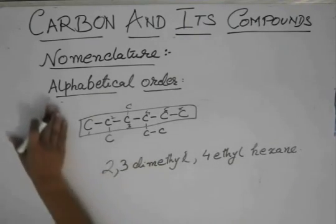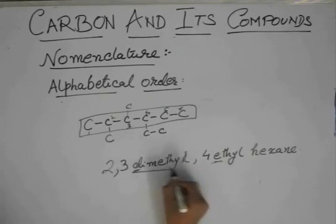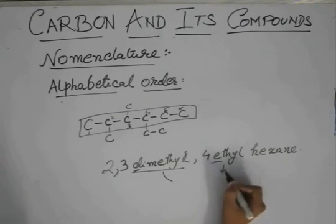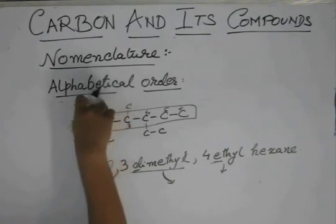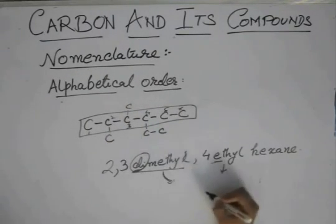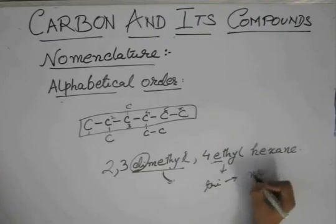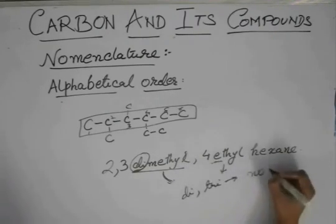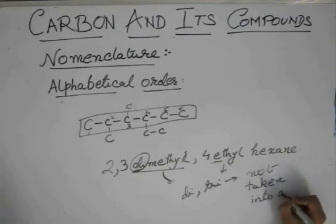But actually, according to this alphabetical order, it might seem that D comes before E. So dimethyl should come before ethyl. It seems like this. But the alphabetical order also says that the DI and TRI are not taken into account.